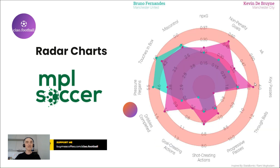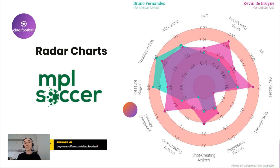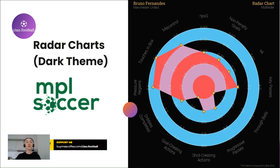Here comes the radar chart — one of the best options to visualize statistics of a player, team, or league. It is also a useful and convenient way to compare different teams, players, and leagues. By the way, MPL Soccer also has a dark theme, which is a nice touch.